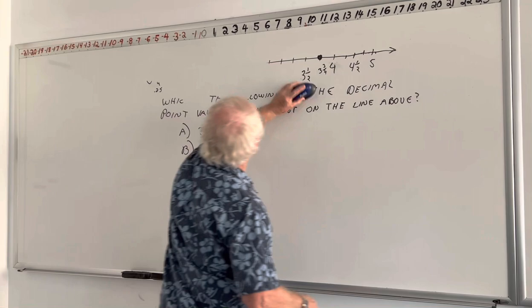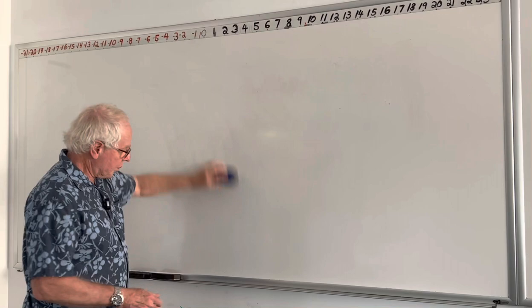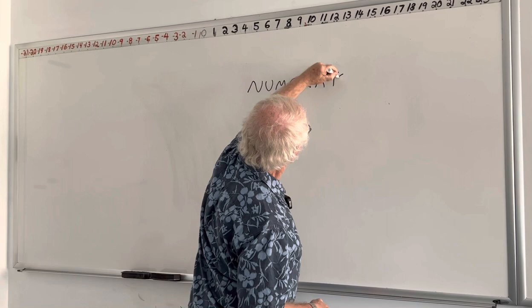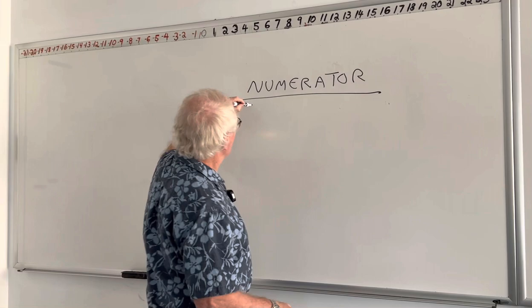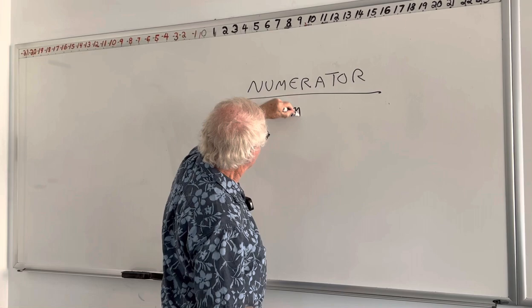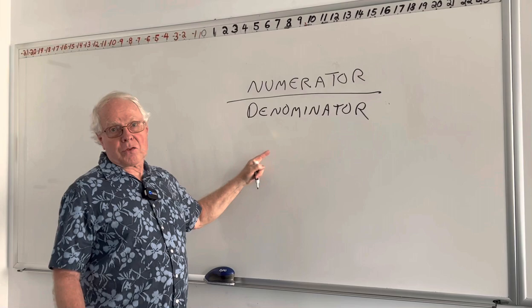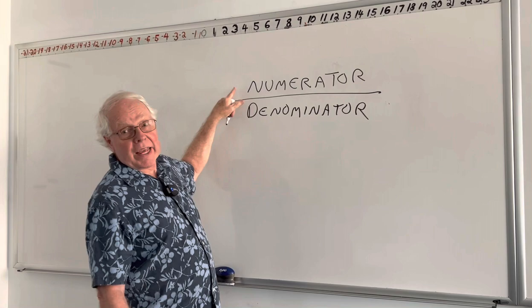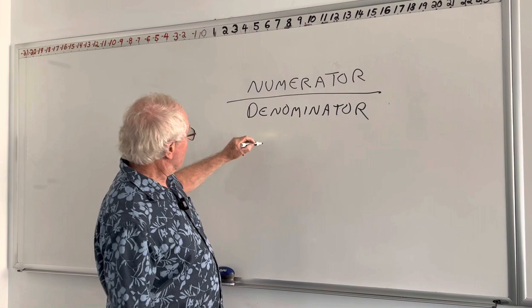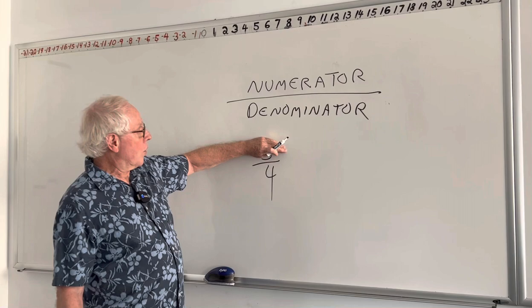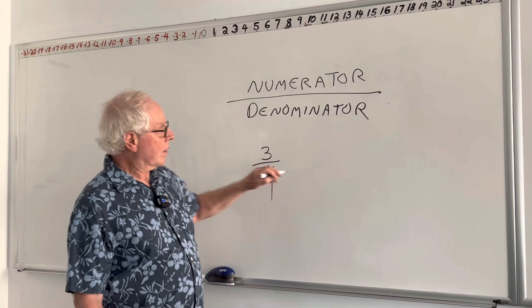A couple of terms we're going to be using a lot that you need to be familiar with. The first term is numerator — in a fraction, that's the number on top. The number on the bottom is the denominator. The denominator tells what we're talking about: halves, quarters, eighths, or whatever it is. The numerator tells us how many of them we're talking about. So in the fraction 3 fourths, the denominator is 4 and the numerator is 3. As soon as you see that 4, it tells you the problem is all about fourths. How many of them? 3.